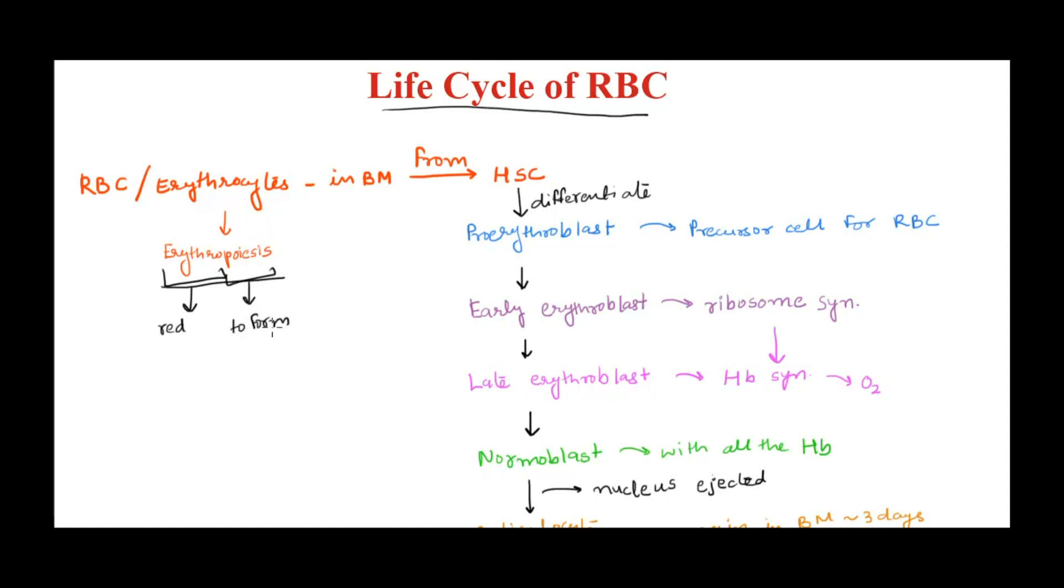So it's the formation of red cells, formation of erythrocytes. This erythropoiesis occurs in bone marrow. If you remember, in one of the previous videos on hematopoiesis, we talked about formation of all the blood cells, which included RBC. I'll put the link on the screen.